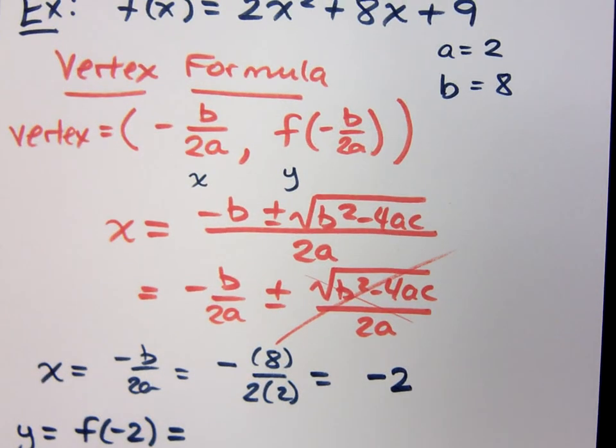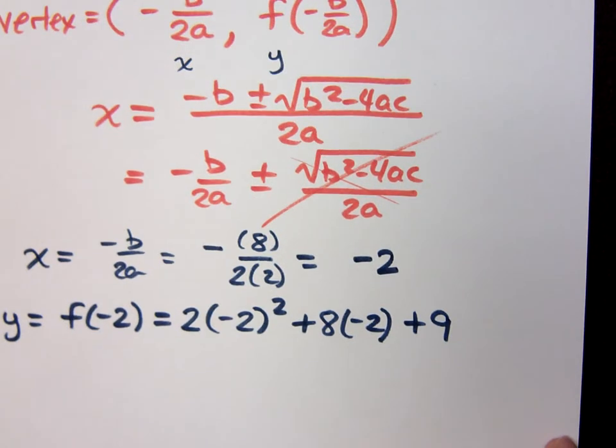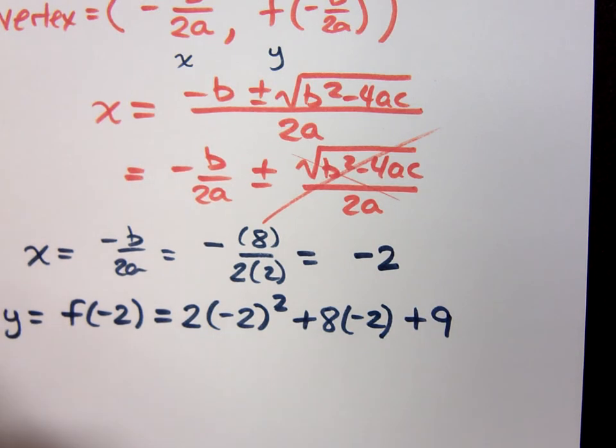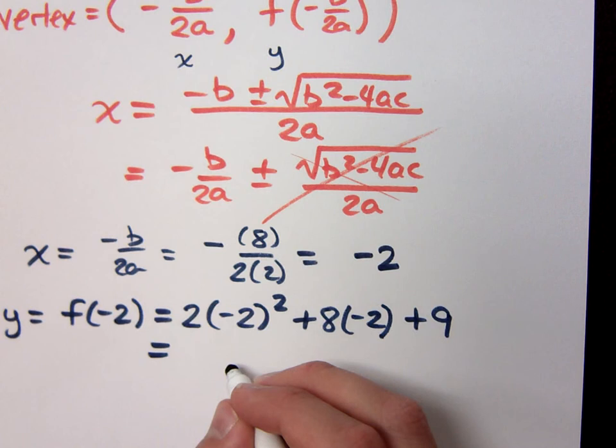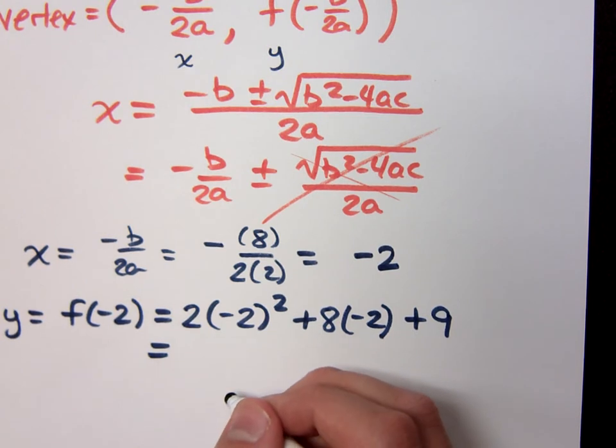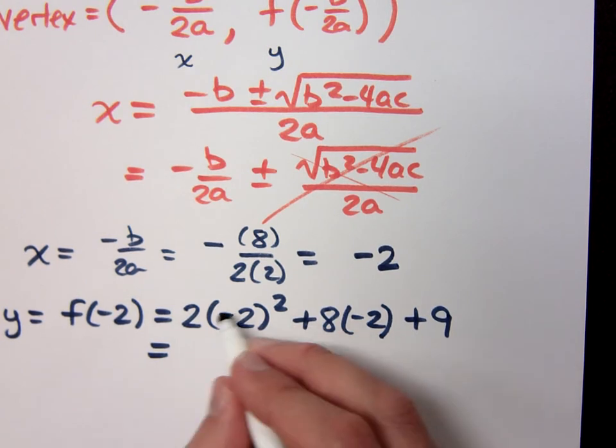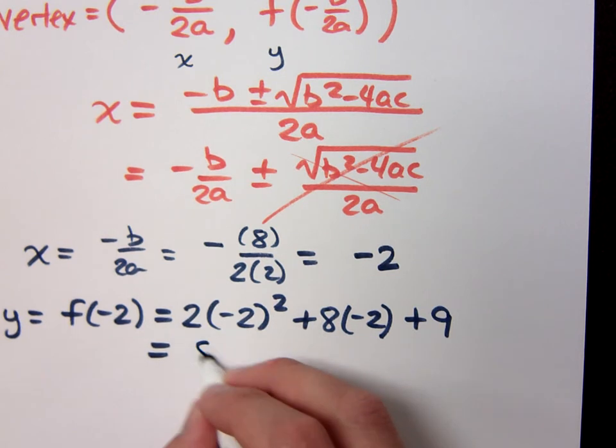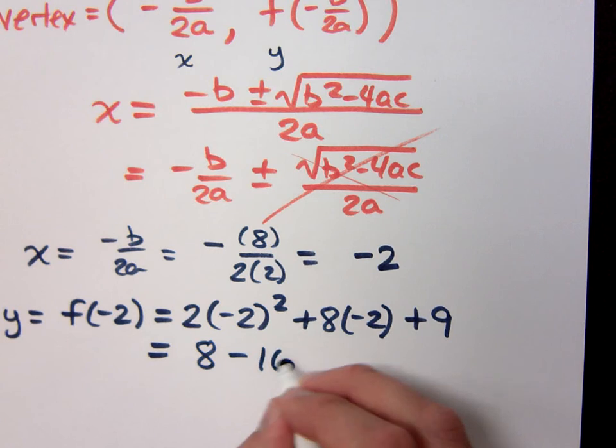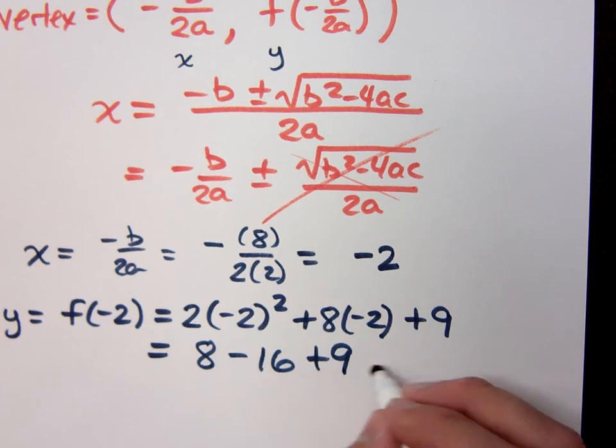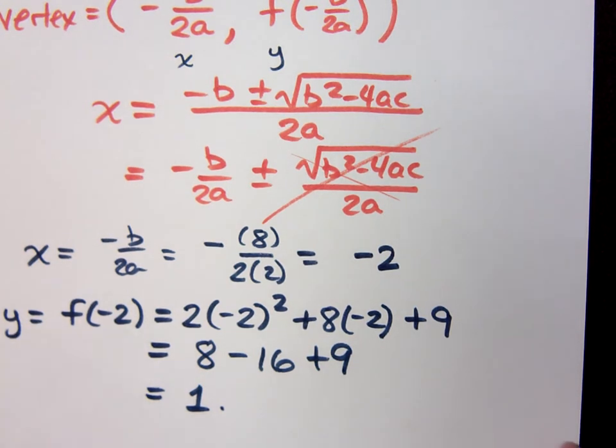Hey, that kind of ran out of room here. So that means 2 times x squared, so that's negative 2 squared, plus 8 times negative 2, plus 9. So let's see, what do I get for that? I get what? Negative 1. You got 1? Let's make sure. What's negative 2 squared times 2? It's 8 minus 16 plus 9, so that does equal positive 1.